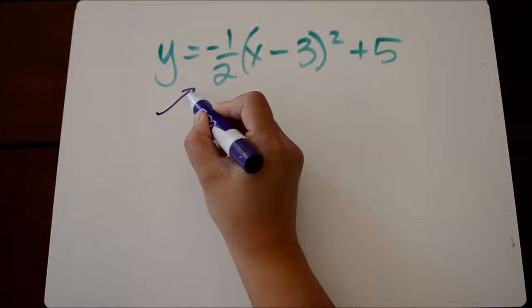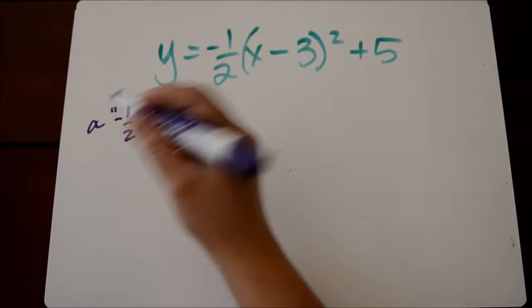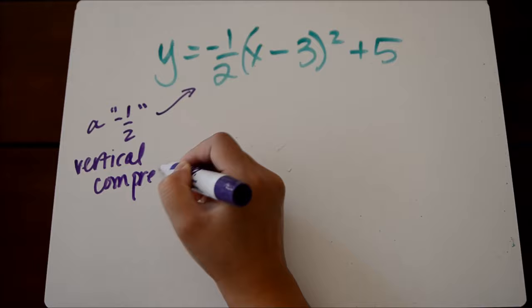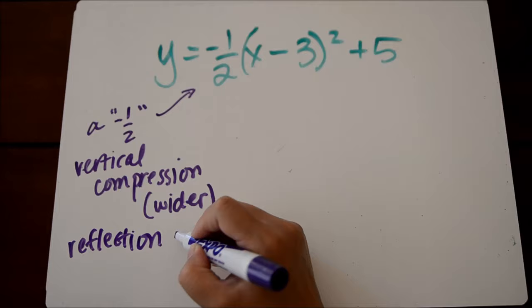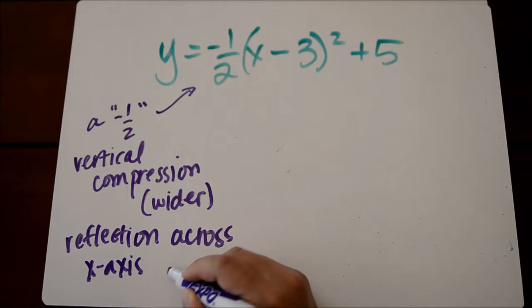If we're given this equation, or this function, our a value is negative 1 half, so that means 2 things. It means that we have a vertical compression, because 1 half is a number between 0 and 1. And this means our graph is going to look a little wide compared to the parent function. And since it's a negative number, it also means we have a reflection across the x-axis. And what that means is our graph is going to open downwards.